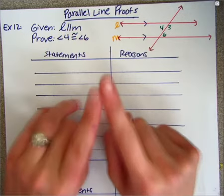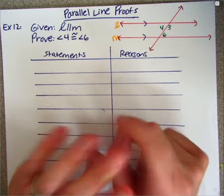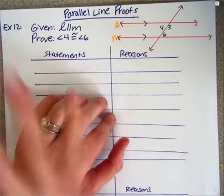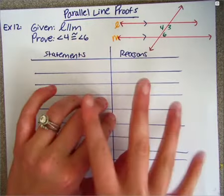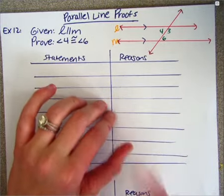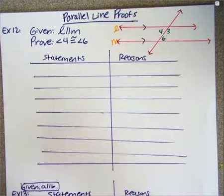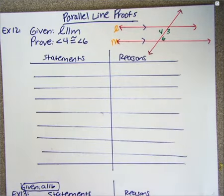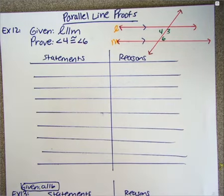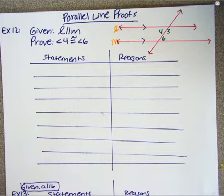Since the lines are parallel, you can use any of those angle pair properties we talked about. If corresponding angles are congruent, you can use the corresponding angle postulate. If same side interior angles are supplementary, you can use the same side interior angle theorem. If alternate exterior angles are congruent, you can use the alternate exterior angle theorem.